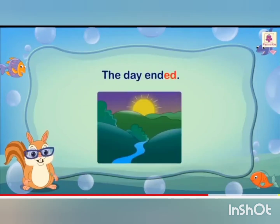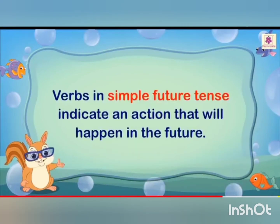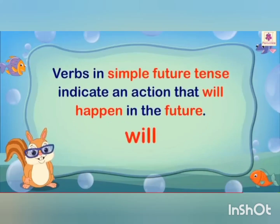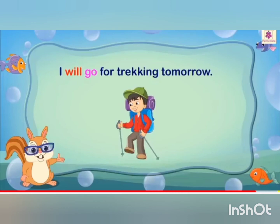The next one is future tense. Verbs in future tense indicate an action that will happen in the future. In this case, the verb simply begins with 'will'. For example, I will go for trekking tomorrow.